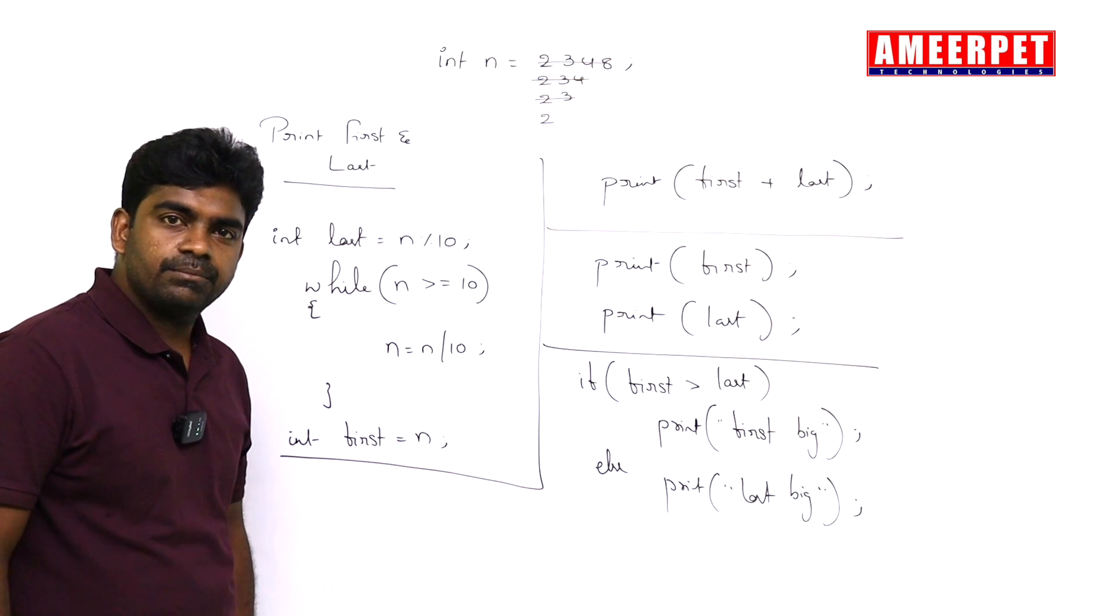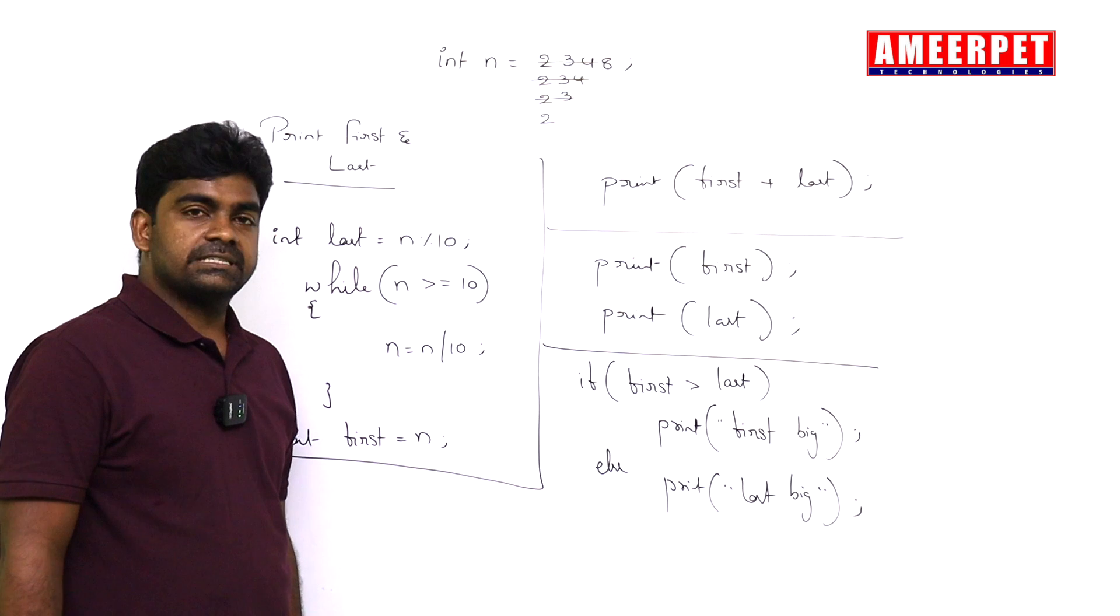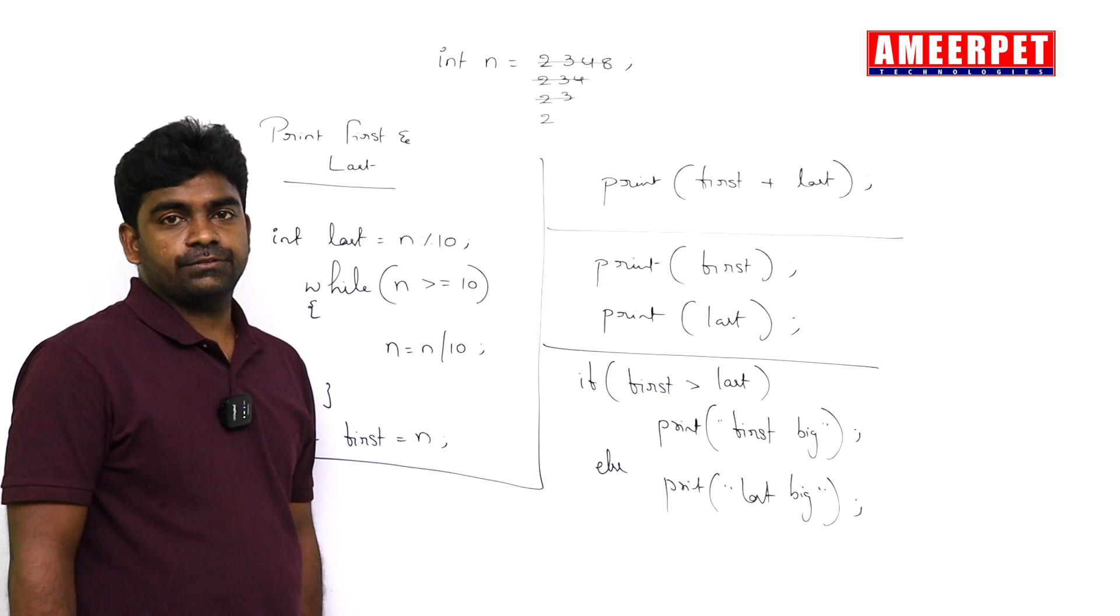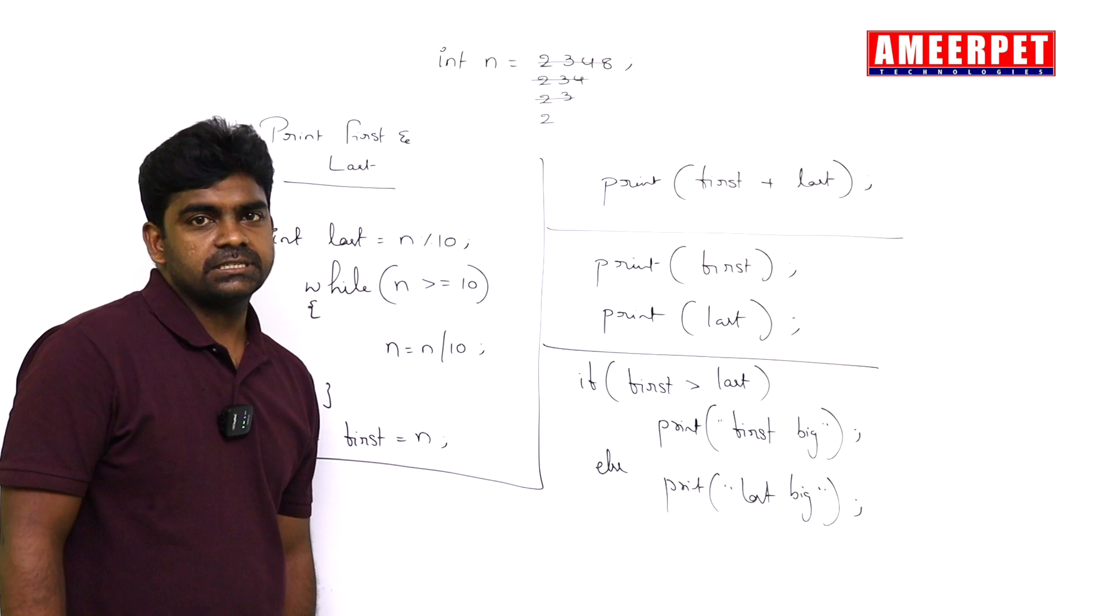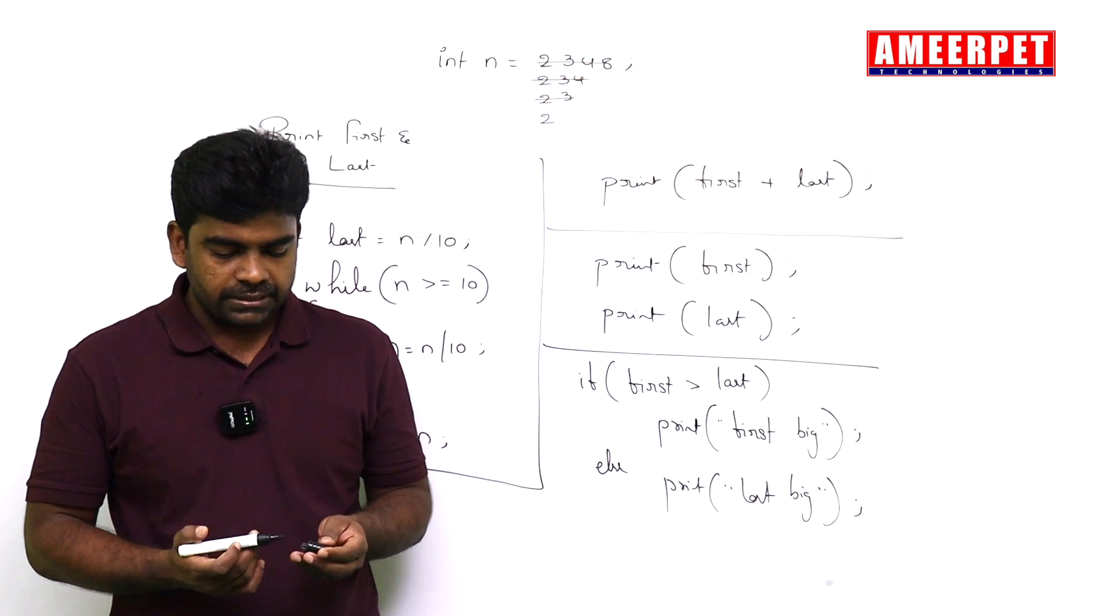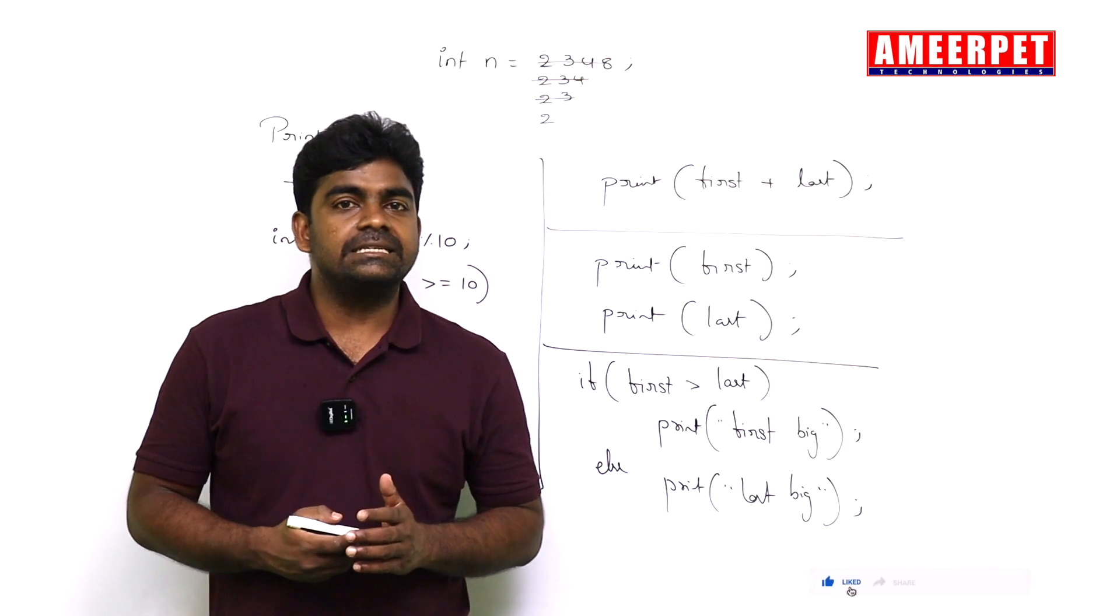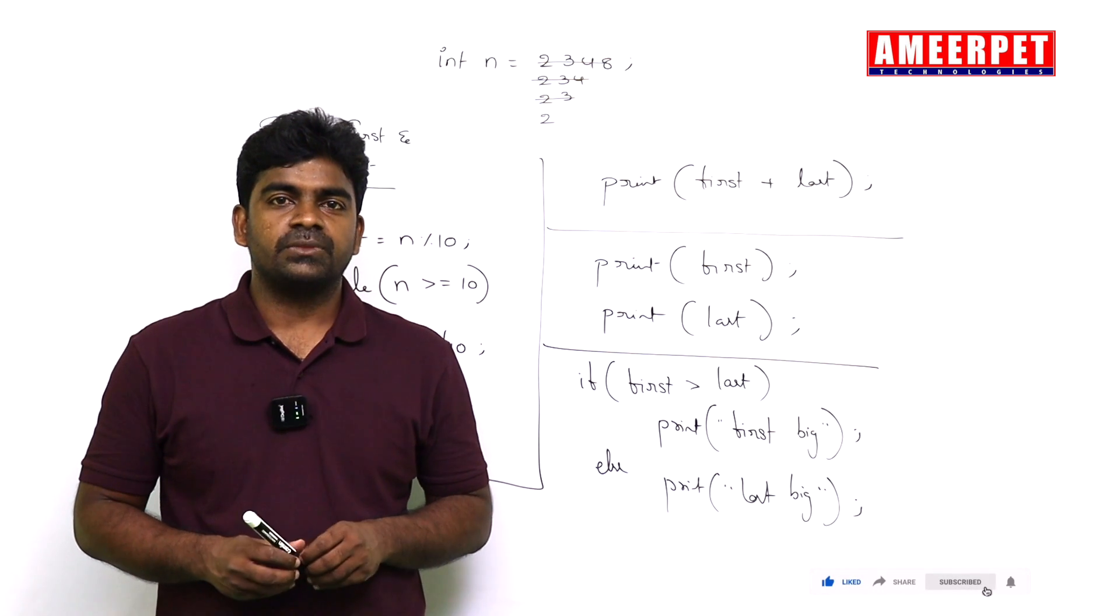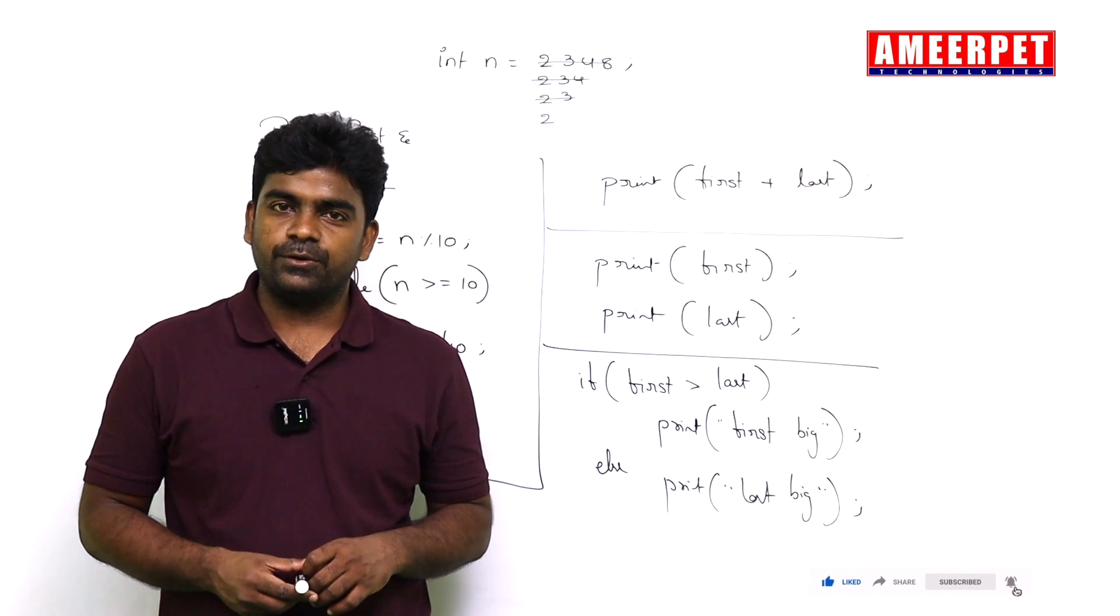This is the simple way of finding first and last digits in the given number, finding the sum of first and last digits, and checking which digit is bigger among first and last digit. Hope you understood. Please subscribe the channel, thank you all.